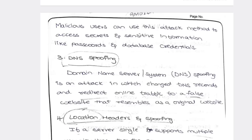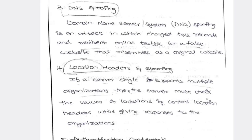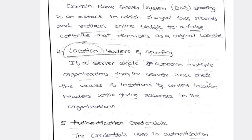The fourth one is location header spoofing. Location header spoofing involves multiple organizations. The server must check the values of location and content-location headers. For example, in Google Maps they will try to find out your address. This type of location-based service is also part of HTTP application attacks. That is location header spoofing.